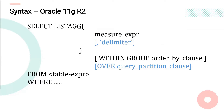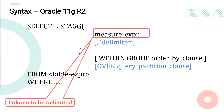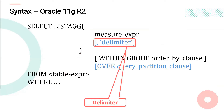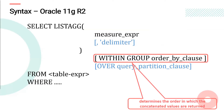Here we see the basic syntax of the LISTAGG analytic function as per 11g. There are three things to consider: the column you want to convert into delimiter-separated information, the delimiter itself — which is optional, with comma being the default — and the mandatory WITHIN GROUP clause, where you can specify how you want to sort the information within the resultant column, whether in ascending or descending order.